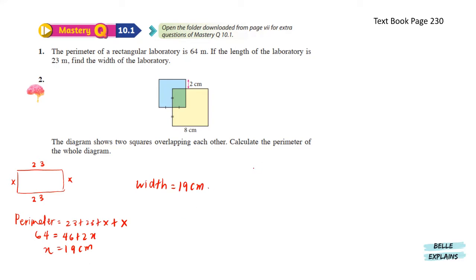Next, for number two, the diagram shows two squares overlapping each other. Calculate the perimeter of the whole diagram. Let's find the unknown sides first — I'm going to label all the unknown sides A, B, C, and D. These two tiny parts indicate that they are the same length, which means A equals to 8 divided by 2. That gives us 4 centimeters.